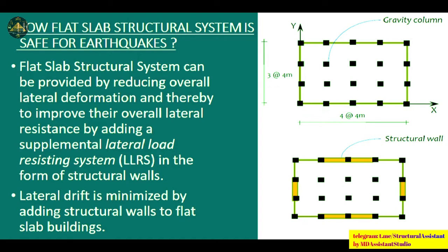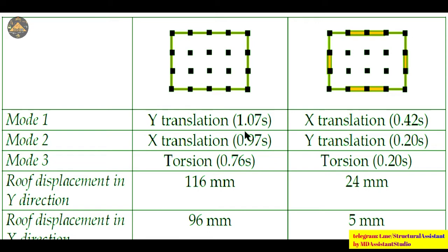To make flat slab systems safer for earthquakes, structural walls can be added. A traditional RCC beam-column frame system can be compared with a system that incorporates structural walls to resist lateral loads. The columns can be designed as gravity columns while structural walls act as lateral load resisting elements. This approach significantly reduces lateral drift — for example, roof displacement can be reduced from 116 mm to just 24 mm.